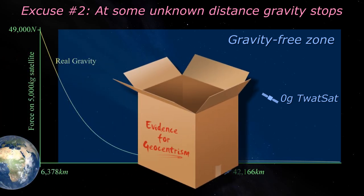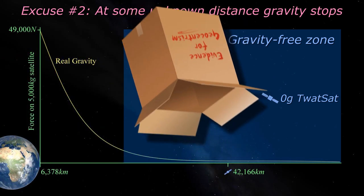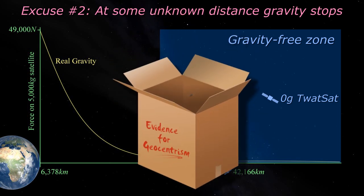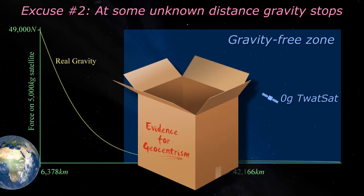Here we have the same problem of a supposed solution given with zero evidence, that doesn't work elsewhere. This explanation would allow geostationary satellites to be placed at any altitude beyond the range where gravity mysteriously stops working. We saw the benefits of being able to do this earlier, and we know that it doesn't happen.